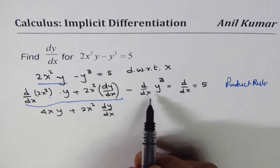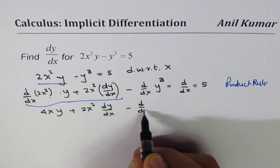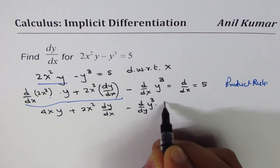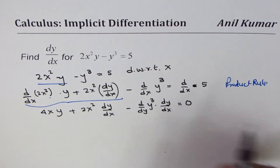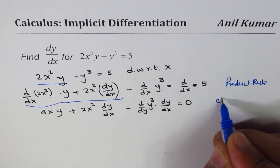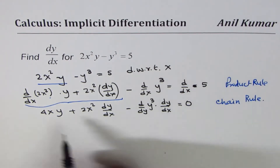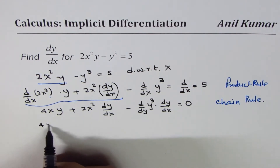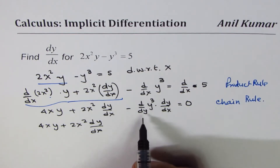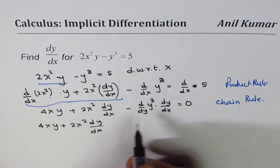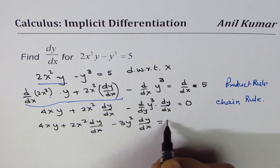Now, to find the derivative of y cubed with respect to x, we apply the chain rule. We write this as d/dy of y cubed times dy/dx. Equals d/dx of 5, which is 0. I am showing you steps so that it is simple to understand. Derivative of y cubed with respect to y is 3y squared, so we get minus 3y squared dy/dx equal to 0.